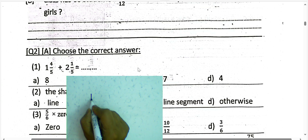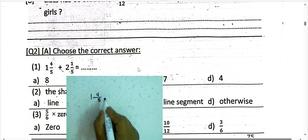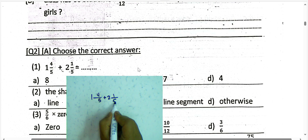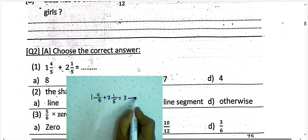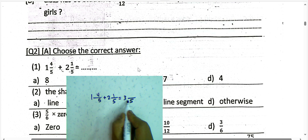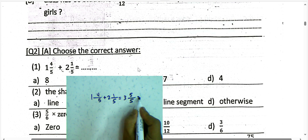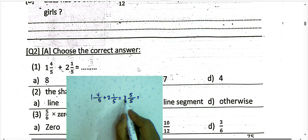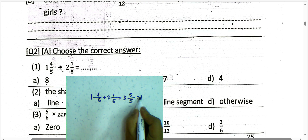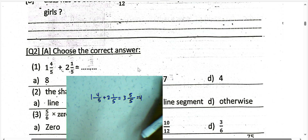Next question: choose the correct answer. 1 and 4/5 plus 2 and 1/5. We know 2 plus 1 equals 3, and 4 plus 1 equals 5; 5 divided by 5 equals 1. Then 1 plus 3, the result would be 4.